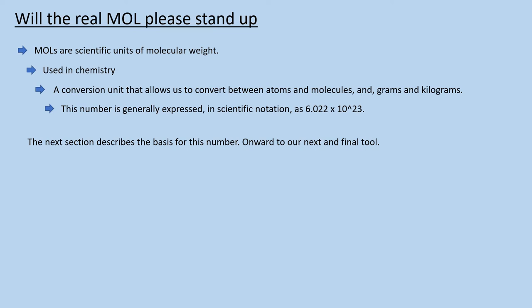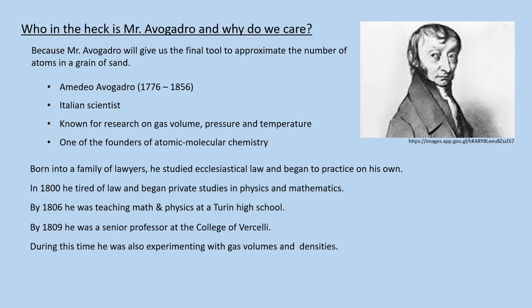Amadeo Avogadro is known today as one of the founders of atomic molecular chemistry. The chemical law that bears his name will provide us with the final technique we need to determine the number of atoms in a grain of sand. Born to an aristocratic family in Turin, Italy in 1776, he initially studied and then practiced ecclesiastical law. But by 1800, he had tired of law and was studying physics and mathematics. By 1806, he had abandoned his law practice and started teaching math and physics at a Turin high school. By 1809, he was teaching as a senior professor at the College of Vercelli. During this time, he was doing research on gas volumes and densities.